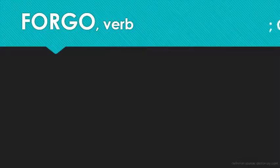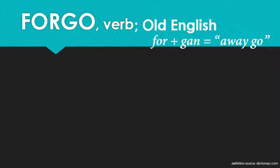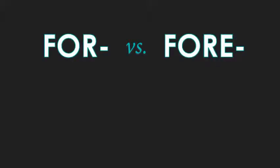'Forego' comes to us from Old English and is really a combination of 'for' and 'go.' 'Gone' was an earlier form of 'go,' but the 'for' we're talking about here isn't the preposition that describes benefits and purpose — like 'I made this for you.' It's a prefix, actually a rather common one in English, that means roughly 'away from.' It can also be used for emphasis. So if you break it down to its roots, 'forego' literally means 'away go' or 'go away.'